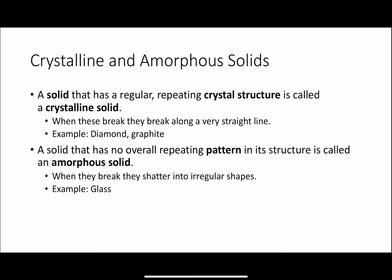Crystalline and amorphous solids. A solid that has a regular repeating crystal structure is called a crystalline solid. A crystal structure is just the way that the atoms are arranged. If you had a very regular structure, like a square like this, this would be an example of a crystalline solid because it has a regular structure. When they break, they would break along this very clean straight line. An example of this would be something like diamond or graphite.